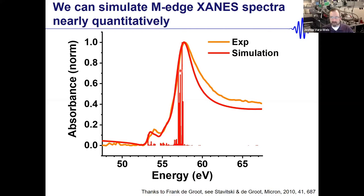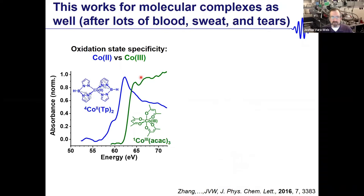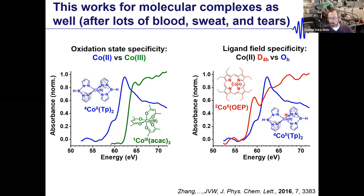A big part of our early work was extending this to molecular complexes — there's more background absorption and more experimental challenges, but it works. We can demonstrate oxidation state specificity: a cobalt(II) octahedral complex versus a cobalt(III) complex shows a blue shift, since Co³⁺ holds its electrons more tightly. For ligand field specificity, a cobalt(II) octahedral complex versus a square-planar cobalt(II) system shows the absorption edge at the same energy (both Co²⁺) but totally different spectral shape due to different selection rules in D₄h vs. Oh symmetry.